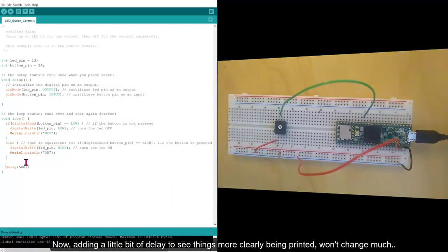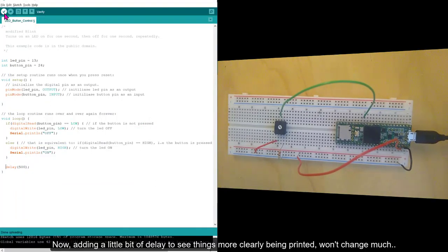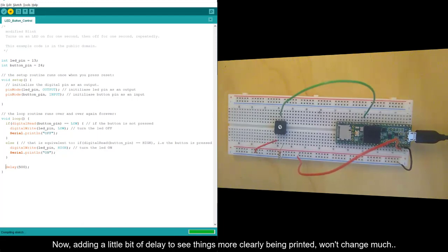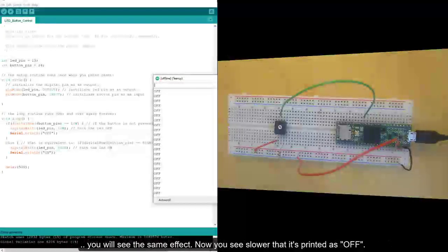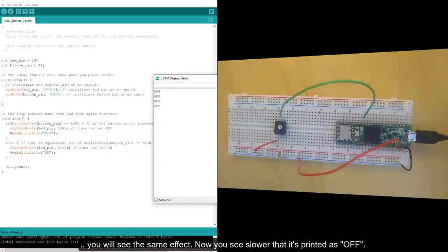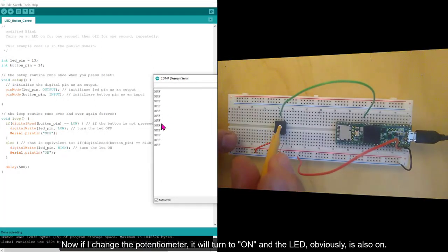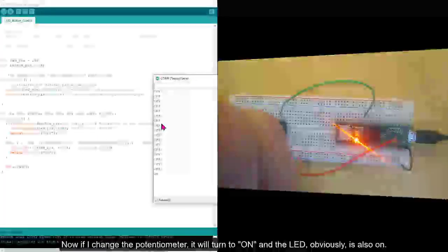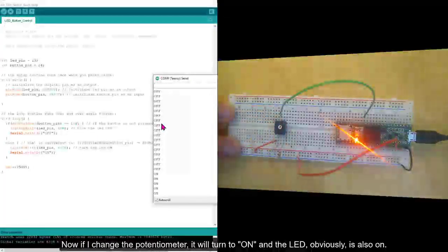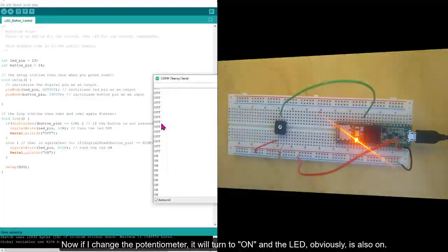Now, adding a little bit of delay to see things more clearly being printed won't change much, you will see the same effect. Now, you see slower that it's being printed as off. Now, if I change the potentiometer, it will turn to on, and the LED obviously is also on.